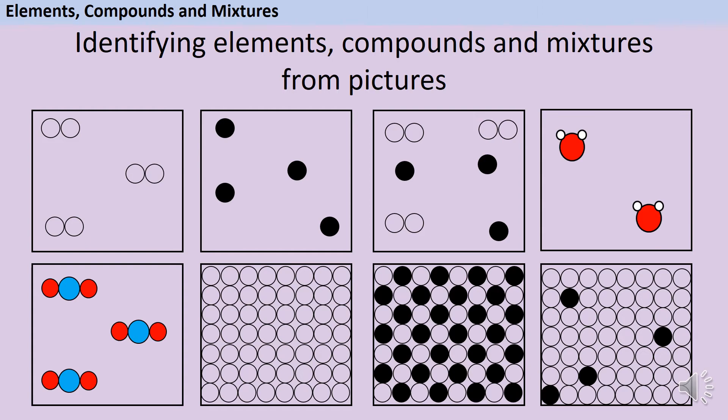And also, they need to always be in the same proportion. So a fixed ratio, a fixed pattern. If it's not an element and it's not a compound, then it must be a mixture. So pause the video and quickly write down which one you think each box is.